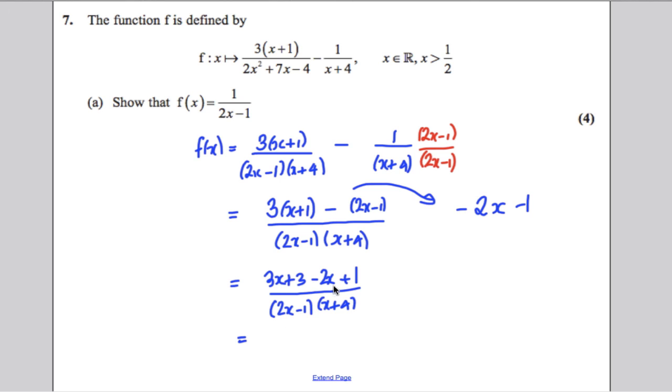When you do that, you get (x+4) over (2x-1)(x+4). Oh look, what a surprise. There's a factor that can cancel off top and bottom and you get, as asked, 1 over (2x-1) and you're done for 4 easy marks.